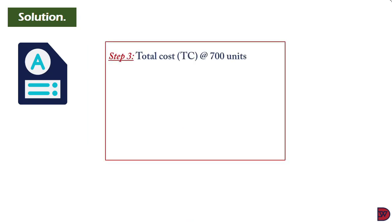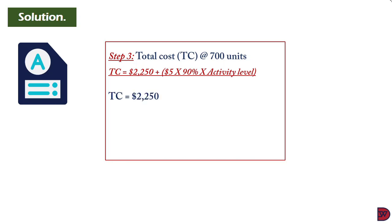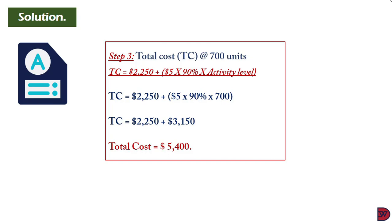To calculate the total cost at 700 units: since 700 exceeds the 400-unit threshold, we reduce the variable cost per unit by 10%. Total cost = fixed cost + (variable cost per unit × 90% × units) = $2,250 + ($5 × 90% × 700) = $2,250 + $3,150 = $5,400.